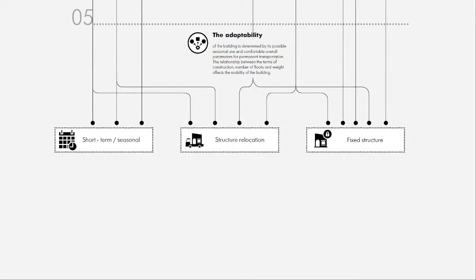One of the last steps is adaptability. The adaptability of a building is determined by its possible seasonal use and parameters for permanent transportation — in other words, whether you can transport or move your building. The relationship between construction terms, number of floors, and transportation method affects this adaptability.